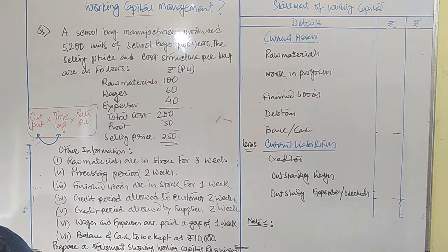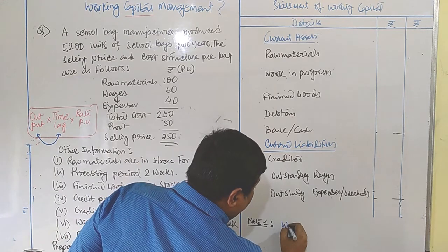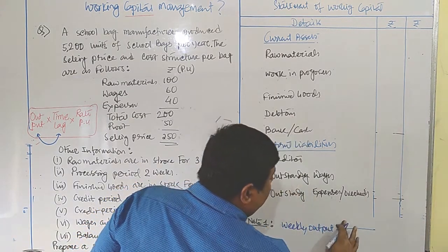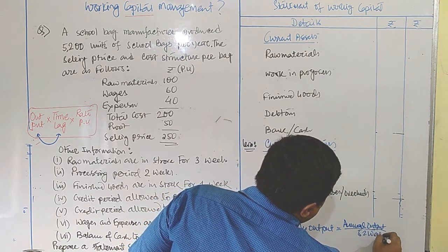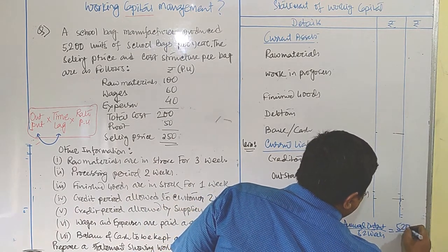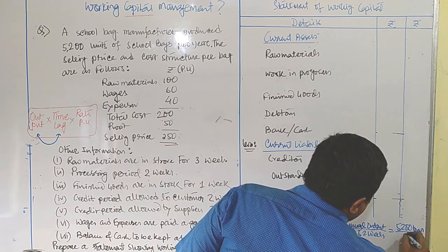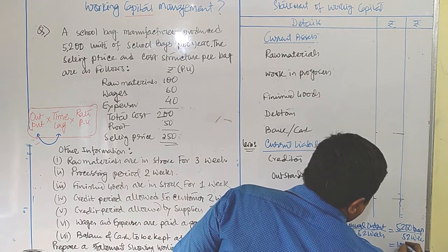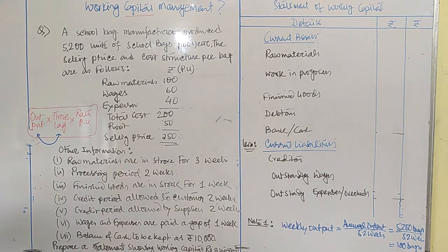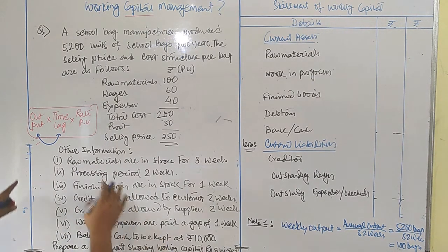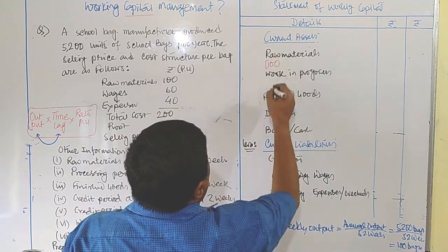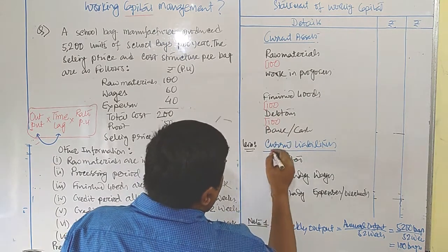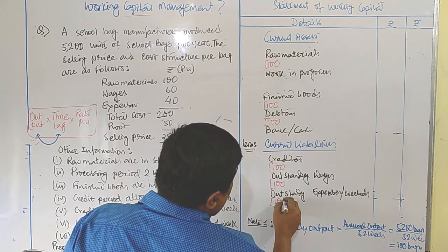Annual or yearly production volume is 5,200 units. To get weekly output, divide annual output by 52 weeks: 5,200 bags ÷ 52 weeks = 100 bags. So the weekly output of this manufacturing concern is 100 bags. This output of 100 applies directly to each and every component — finished goods, debtors, creditors, outstanding wages, and outstanding expenses all use 100 as the output figure.